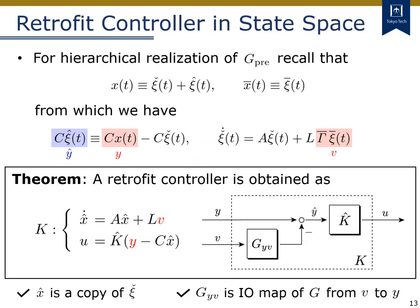To produce y-hat, let's recall that this equivalence holds for the hierarchical realization. Using this equality, we can actually produce the virtual output y-hat by subtracting the signal C times xi-check from the actual output y, and constructing an observer-like dynamics in which the measured signal V(t) is used. Therefore, as shown in this theorem, a retrofit controller can be realized as this dynamical controller, where the state x-hat is just a copy of xi-check. Its block diagram is given as this figure, where G_yv denotes the input-output map of G from V to Y, whose internal state corresponds to x-hat.